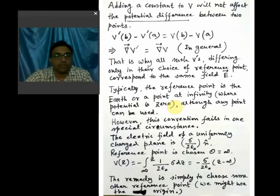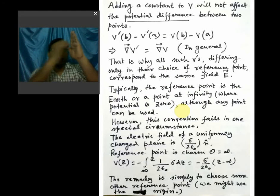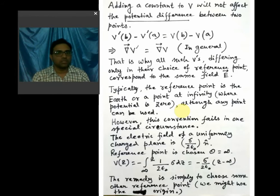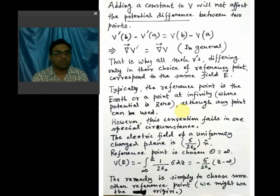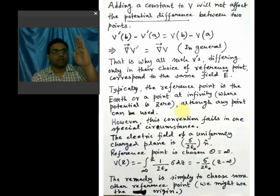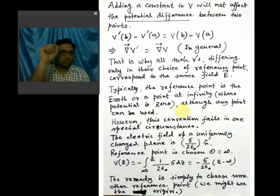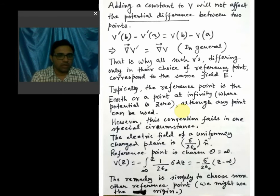We know the electric field of a uniformly charged plane is sigma by 2 epsilon-naught, times n-cap, where sigma is the uniform surface charge density and n-cap is the unit normal. Using Gauss's law with a Gaussian pill box — exploiting planar symmetry — we get E into 2 delta-s equals sigma delta-s by epsilon-naught, giving sigma by 2 epsilon-naught. So from Gauss's law we can readily find this result.